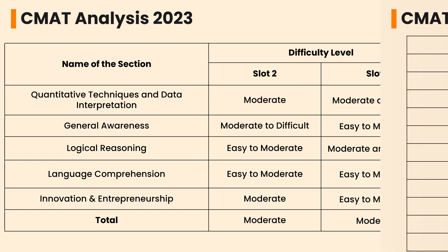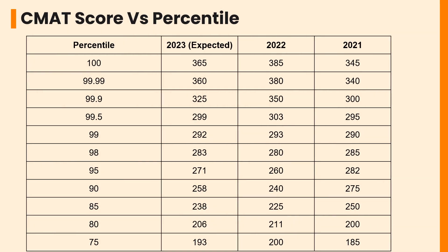As discussed previously, the CMAT 2023 exam was of moderate level. Based on this analysis and expert reviews, the CMAT 2023 expected score versus percentile has been discussed here. For the year 2022, a candidate got a score of 385 for which they received Rank 1, showing a percentile of 100. This year, 365 marks are expected to be scored by Rank 1.